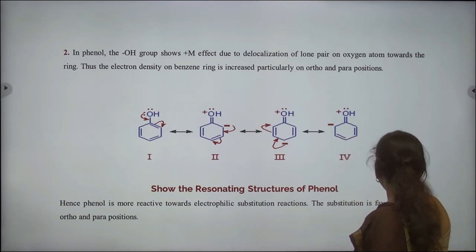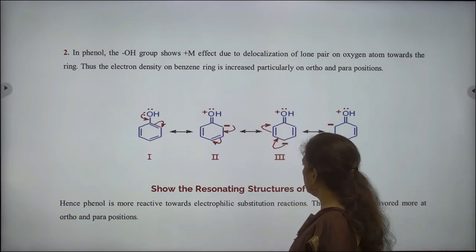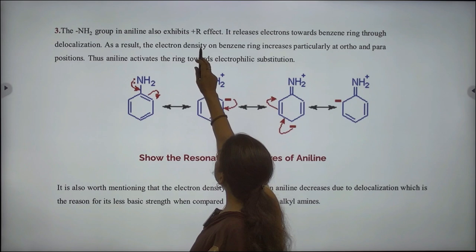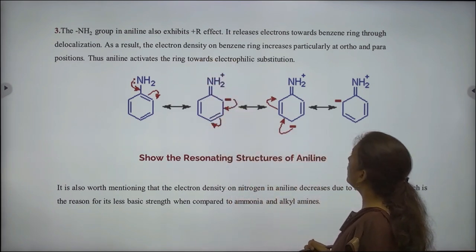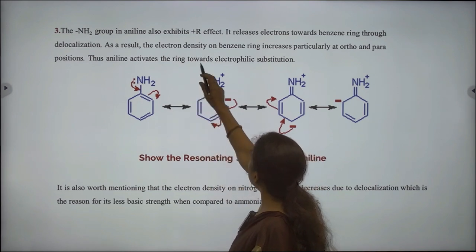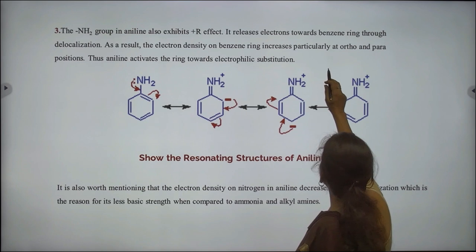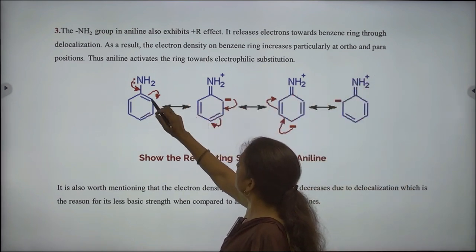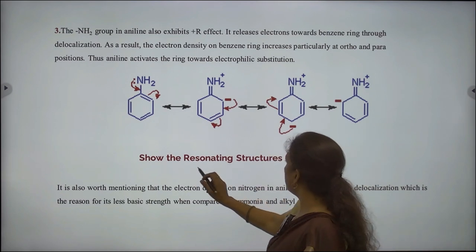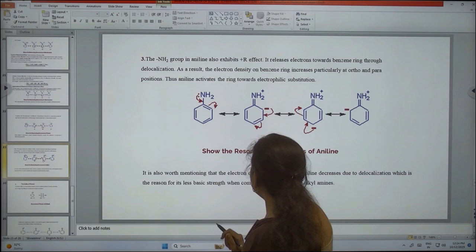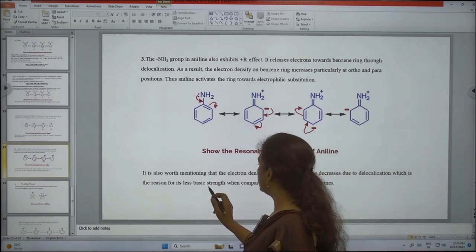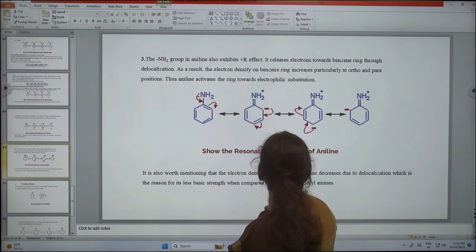The amino group in aniline also exhibits plus R effect. It releases electrons towards the benzene ring through delocalization. As a result, the electron density on the benzene ring increases particularly at ortho and para positions. Thus, aniline activates the ring towards electrophilic substitution. It is also worth mentioning that the electron density on nitrogen in aniline decreases due to delocalization, which is the reason for its less basic strength when compared to ammonia and alkylamines.